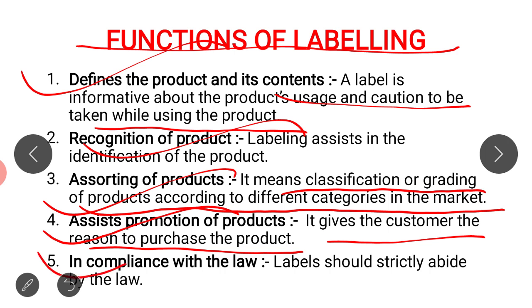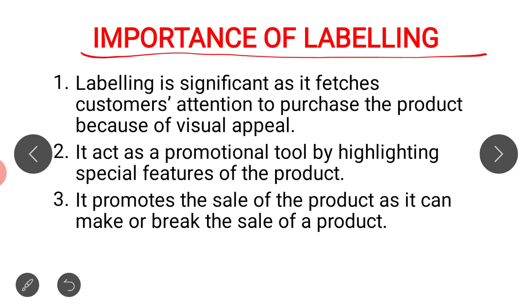The last function of labeling is compliance with the law. All labels strictly abide by the law — meaning they follow whatever is stated by the law. If anything needs to be done according to the law, it is mentioned on the label. For example, tobacco labels must mention 'tobacco is injurious to health.' Similarly, cigarette packages should carry the statutory warning 'smoking is injurious to health.' So labeling must also be done in accordance with the law.